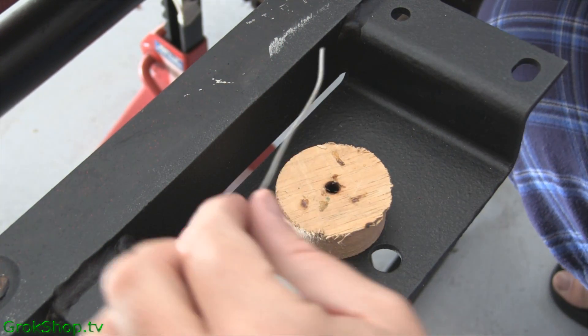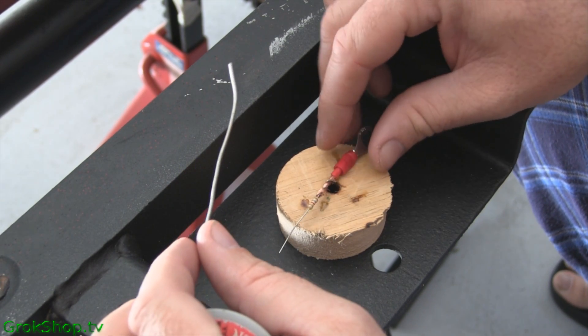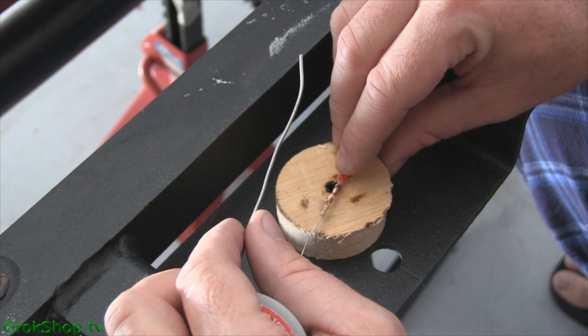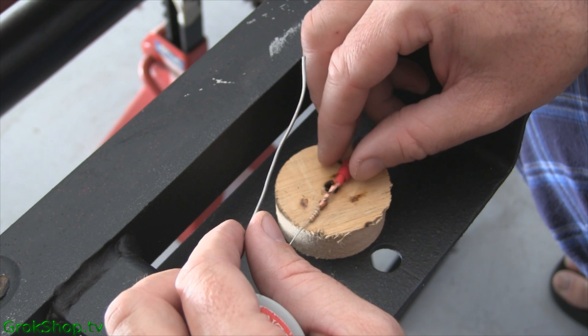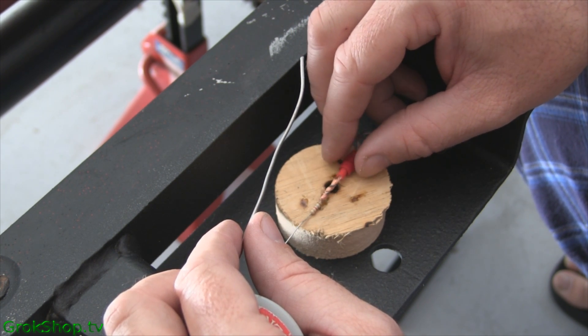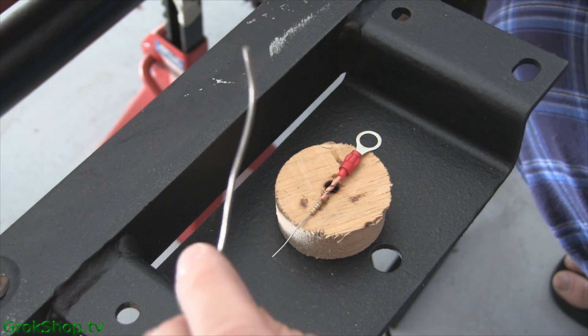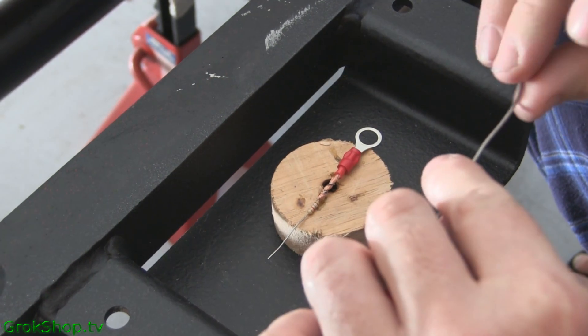So what I'm going to do is solder on a ring terminal directly to the resistor and use that to connect directly to the positive battery connection. I just take a little wire from that terminal and wrap it right around the end of the resistor, and I'm going to solder it on here.